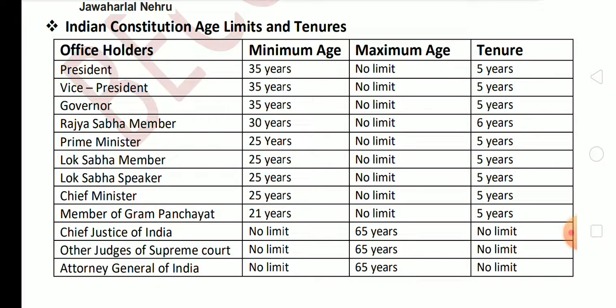Chief Minister — minimum age required is 25 years, no maximum limit, tenure 5 years. Member of Gram Panchayat — minimum age required is 21 years, no maximum limit, tenure 5 years. For the Chief Justice of India there is no minimum age, but the maximum age limit is 65 years. In the case of judiciary, it is the opposite — maximum age applies, not minimum.